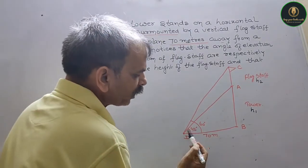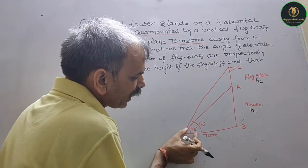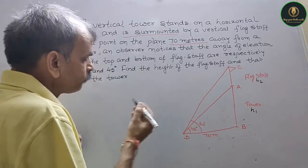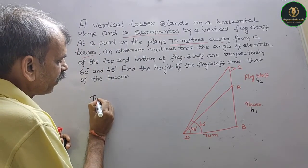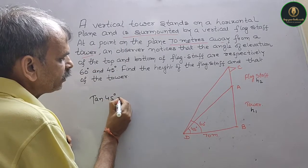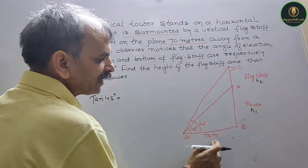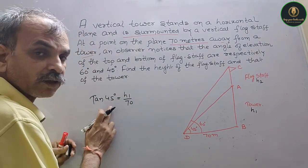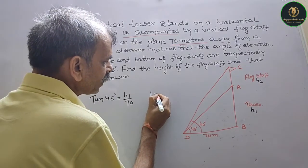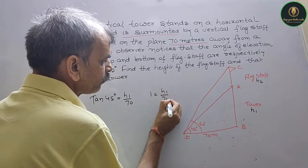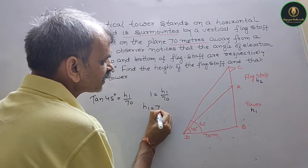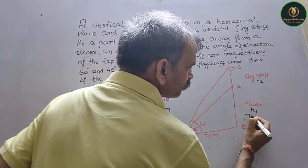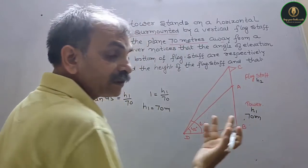Now look, 45 degrees is forming up to here, that means h1. So what will you get? Tan 45 degrees is equal to h1 by 70. Tan 45 is equal to 1, so you get 1 equals h1 by 70. Therefore h1 equals 70 meters. So this is your 70 meters. That means height of the tower is 70 meters.